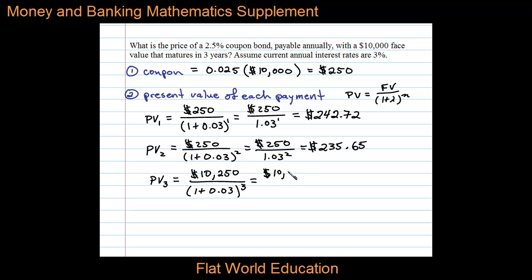Simplifying, $10,250 divided by 1.03^3 gives us a present value of $9,380.20.